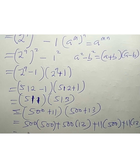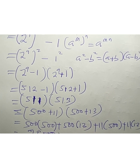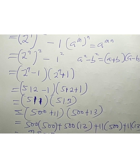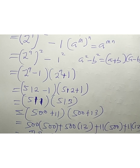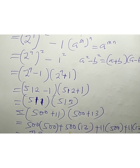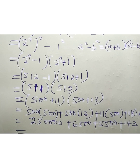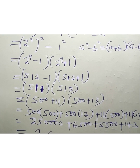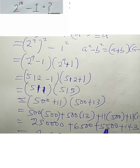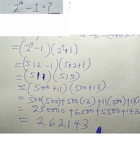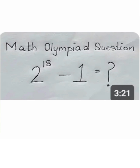This gives us 250,000 plus 6,500 plus 5,500 plus 143. Adding all together, the result is 262,143. Thank you for watching, and do remember to subscribe to my YouTube channel. Bye-bye.